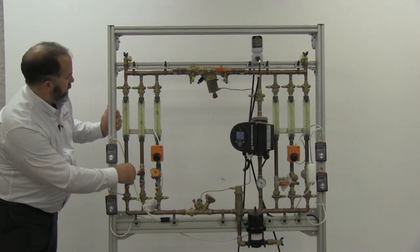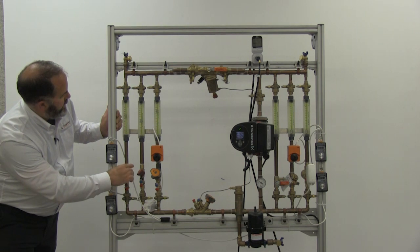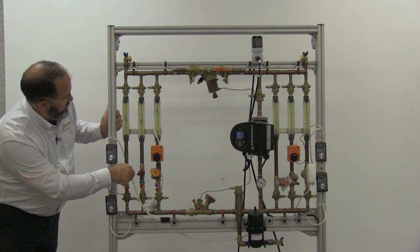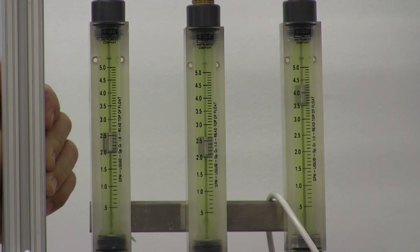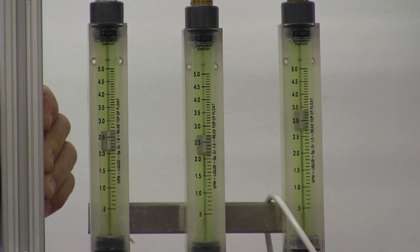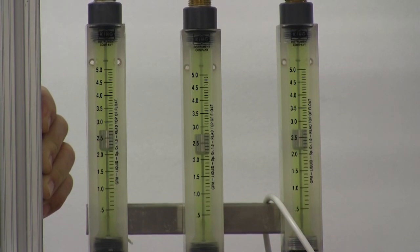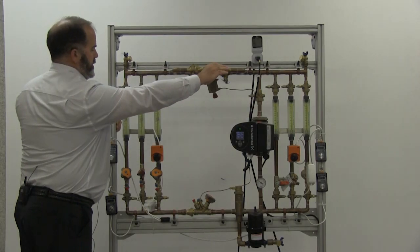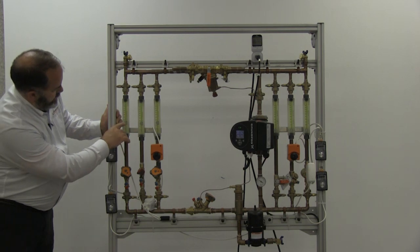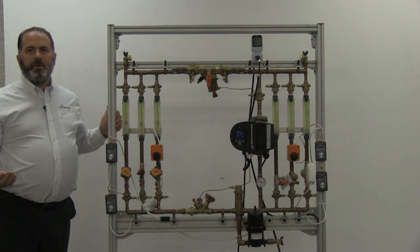So again, I'll start with proportional balancing, bringing everything to the same amount of overflow. And then we'll now activate our differential pressure controller. And that'll bring us to our design flow rate of 2 GPM.